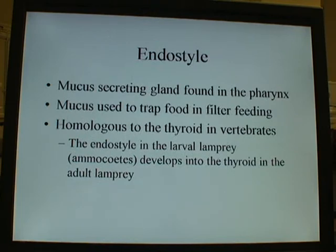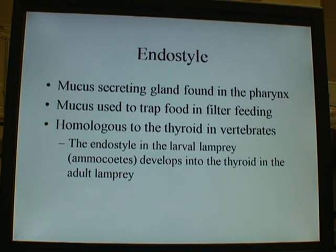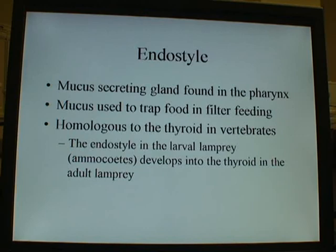The endostyle is a mucus-secreting gland found in the pharynx. In less-derived taxa — mostly the invertebrate chordates — the mucus is used to trap food during filter feeding. In the lamprey, a less-derived vertebrate, the larval form called the ammocoetes actually has an endostyle, but during development it changes into a thyroid. The thyroid is the gland seen in vertebrates as derived or more derived than the lamprey. Even though you may not see an endostyle during development of some vertebrate taxa, you always see a thyroid in the more-derived ones. Therefore, the presence of a thyroid is homologous to the presence of an endostyle, which is why it counts as a defining characteristic of chordates.